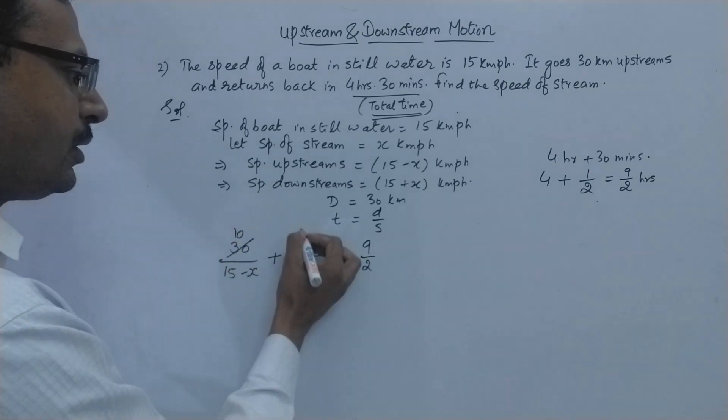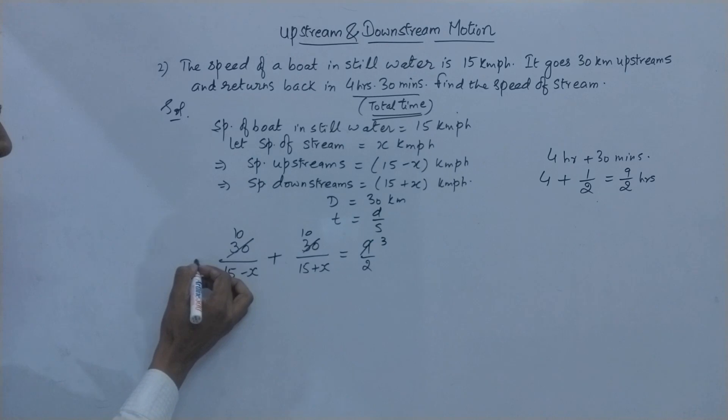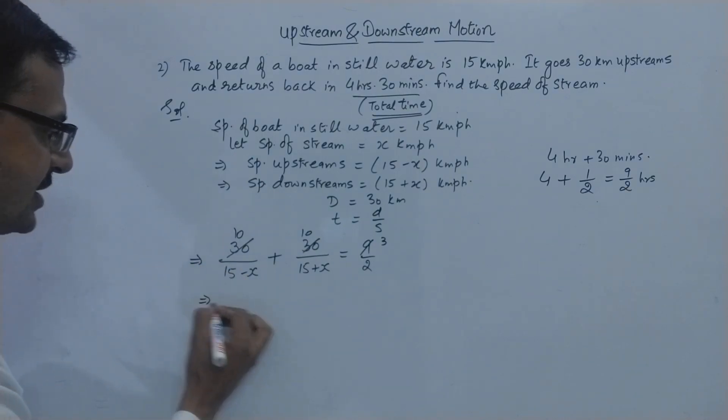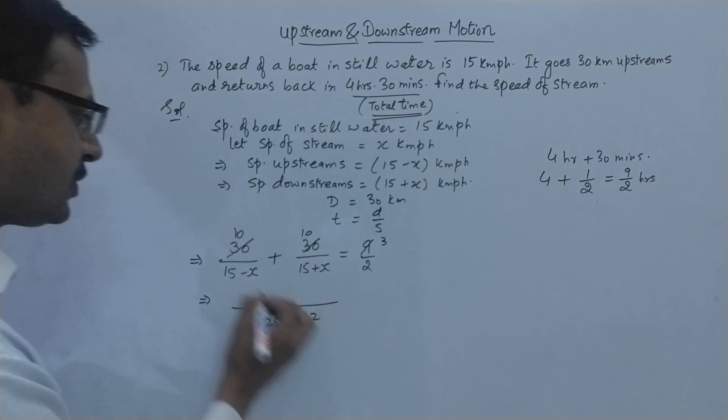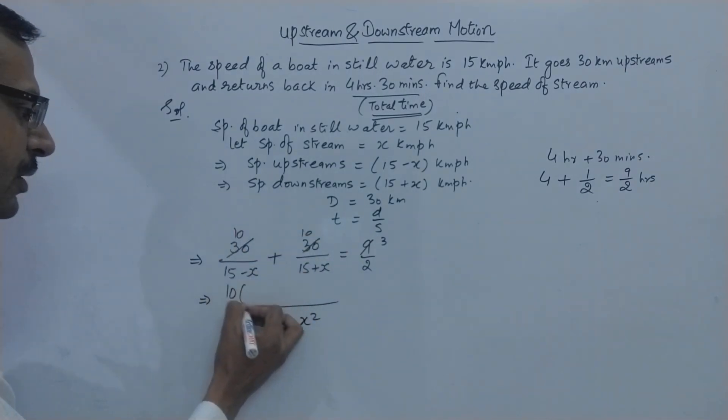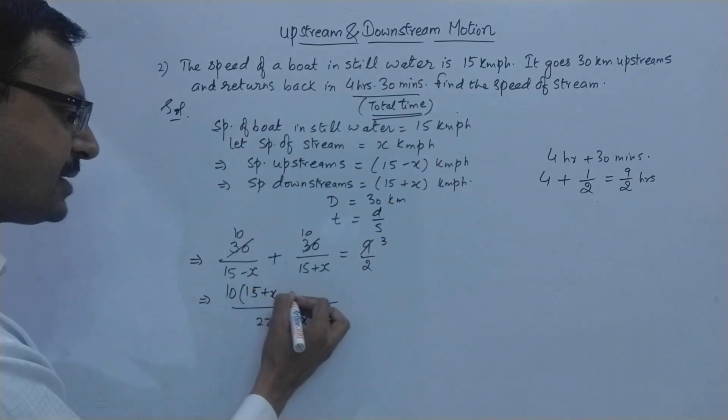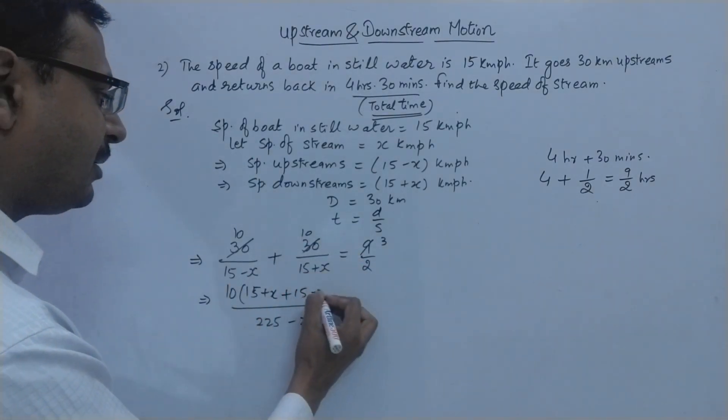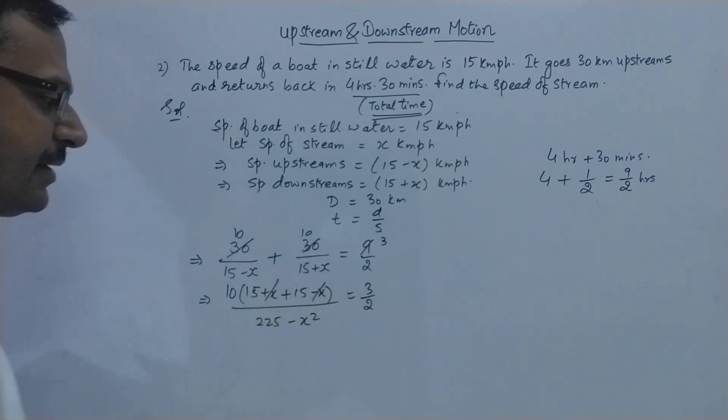So this is 9 upon 2 and if you can see here we have a common factor 3 which is being cancelled throughout in all the terms. So this will remove the complexity of the equation. So now just take common, this is 225 minus x square. So in this 10 is common. So here you have 15 plus x plus and here you have 15 minus x and this is 3 upon 2. So x gets cancelled here.